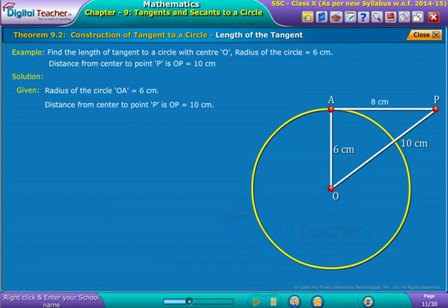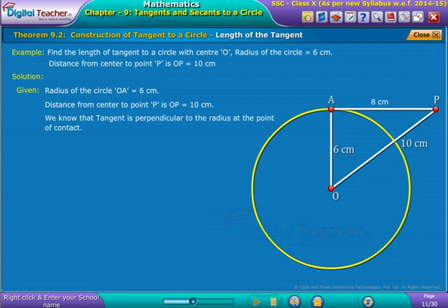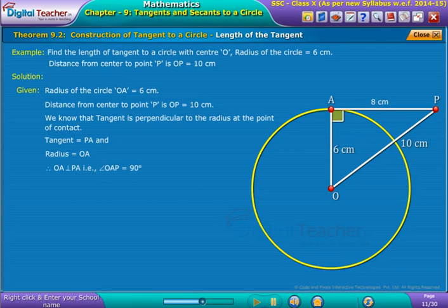We know that tangent is perpendicular to the radius at the point of contact. Here from the figure we observe that tangent is equal to PA and radius is equal to OA. Thus OA is perpendicular to PA.